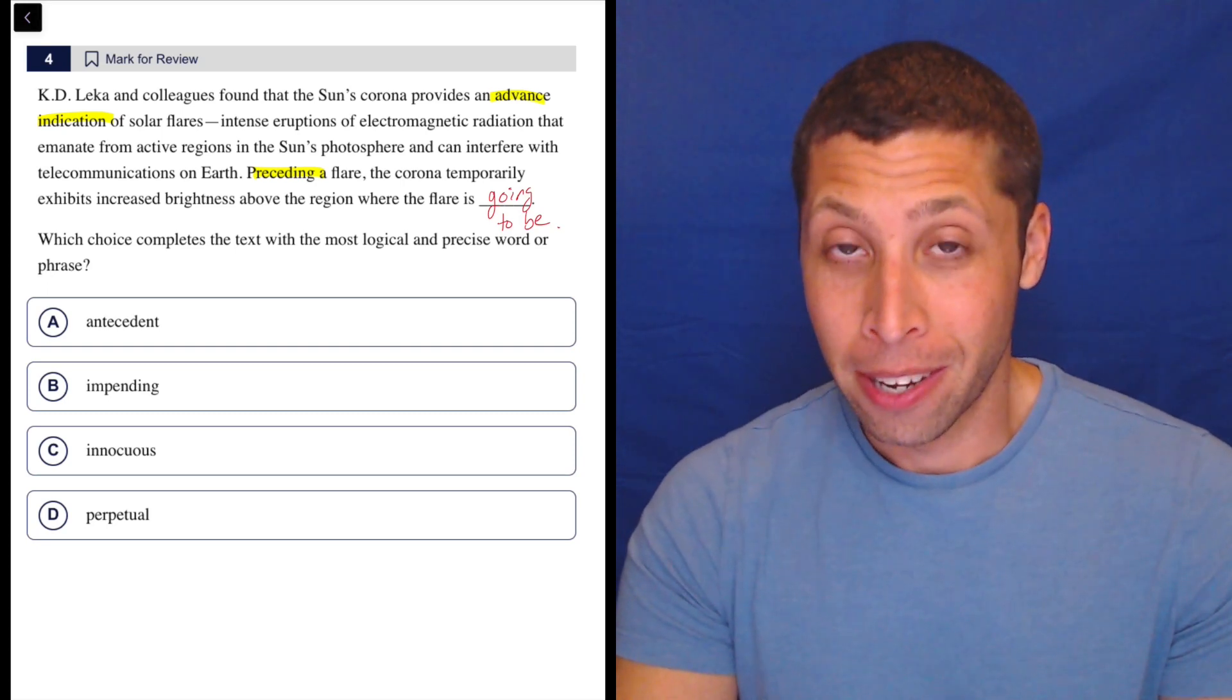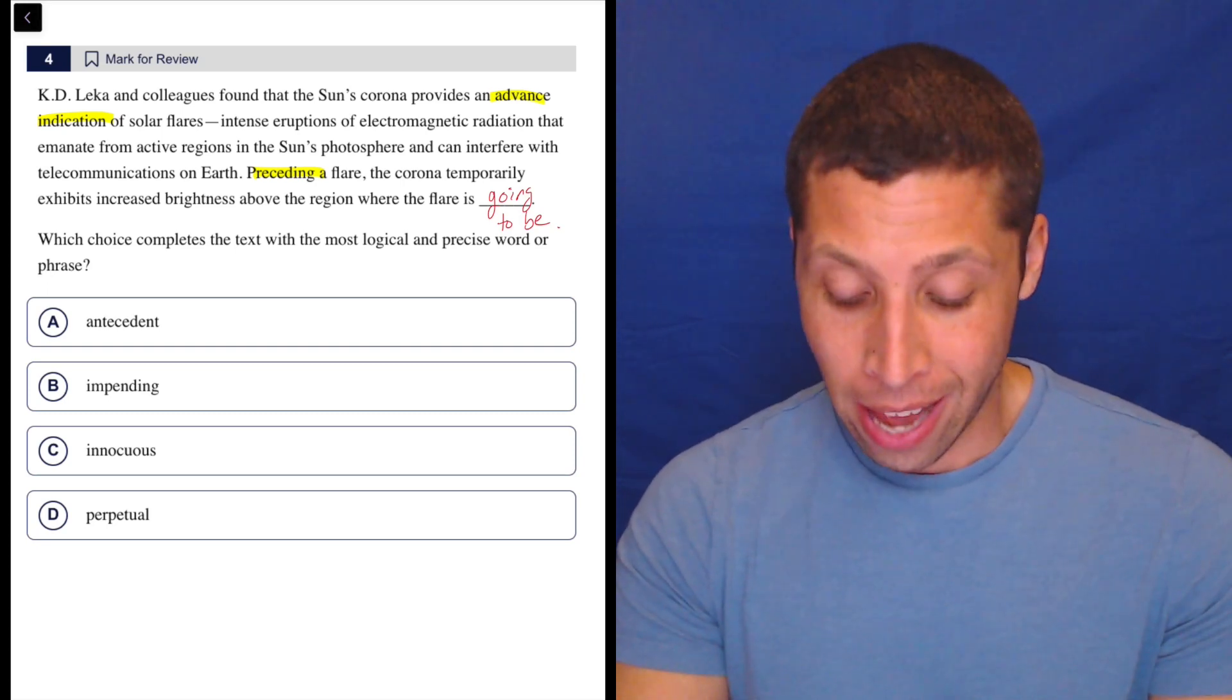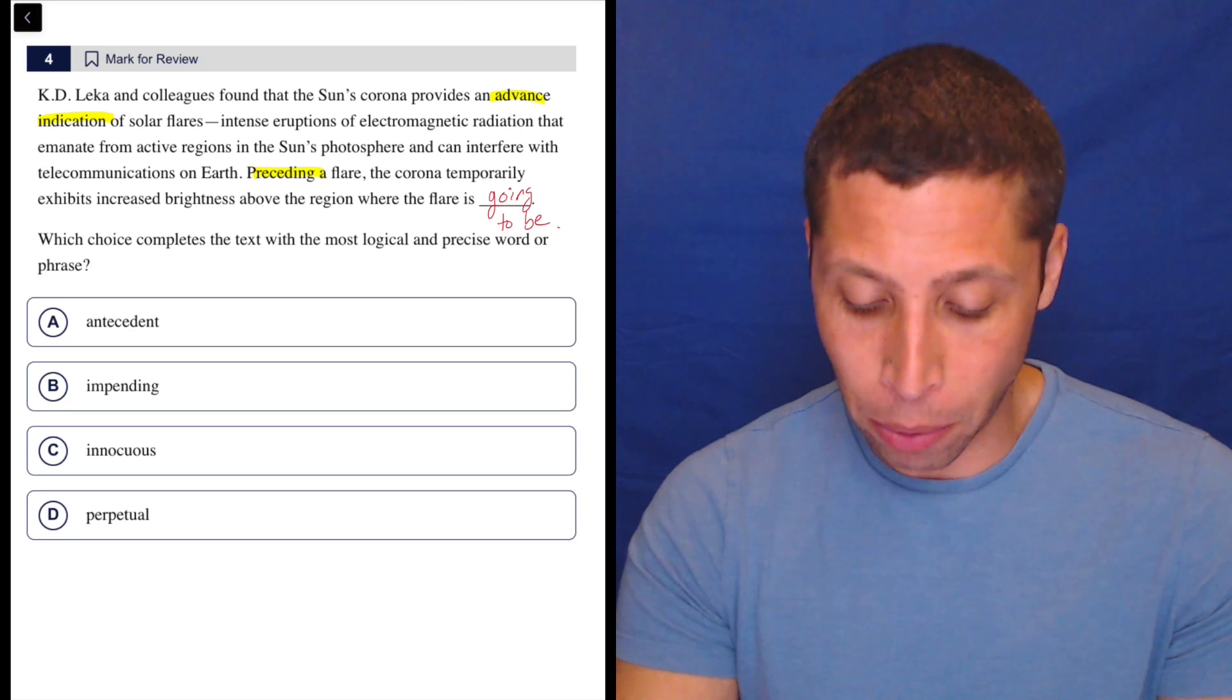It's preceding the flare. So it comes before it. And then what happens? It exhibits increased brightness above the region where the flare is about to be.